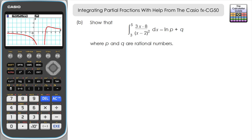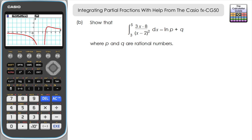For part B, we need to 'show that' — meaning we must show all steps. We're integrating our original fraction with respect to x between limits 5 and 3, giving an answer in the form natural log p plus q. Part A is directly useful here: replacing the original fraction with the partial fraction form we found makes the integration much easier.